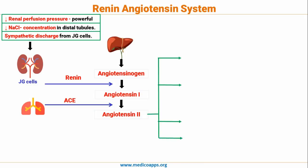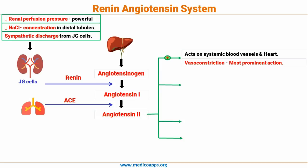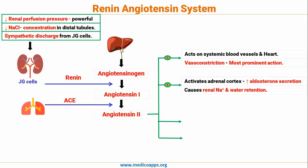This has been asked very frequently in various examinations. Let's look at the functions of angiotensin 2, which is the main hormone acting in the renin-angiotensin system. Angiotensin 2 acts on the systemic blood vessels and heart causing vasoconstriction — vasoconstriction is the most prominent action of angiotensin 2. It also activates the adrenal cortex and increases aldosterone secretion, which causes increased renal sodium and water retention.